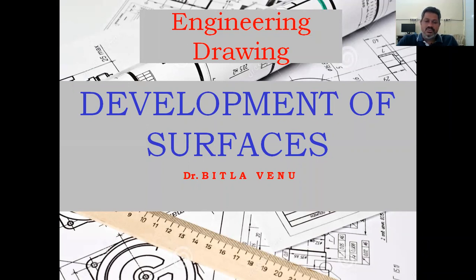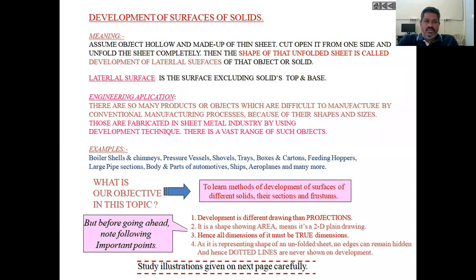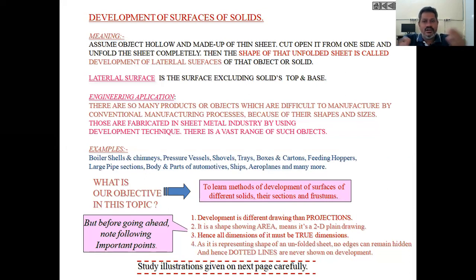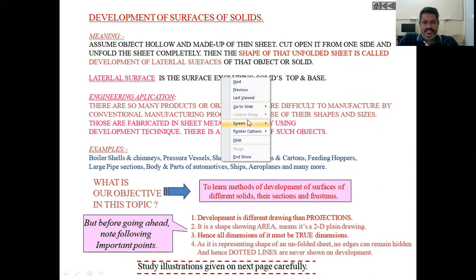Now let me move forward to see what exactly the development of surface is. Assume an object — if you assume a hollow object, then you cut that object and unwrap it, unfold it like a sheet completely and lay that sheet down on the horizontal plane. That unfolded sheet is called the development of the lateral surface of that object.